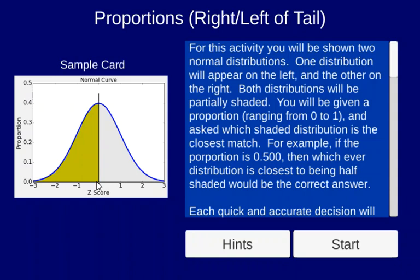And as you may recall, proportions range from 0 to 1. 0 would mean none of it is shaded, 1 would mean all of it is shaded, 0.5 would mean half it is shaded.